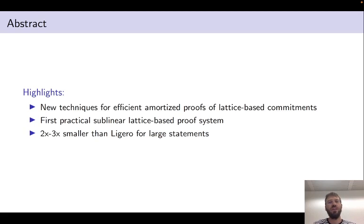On a technical level, we introduce new techniques for proving lattice-based commitments in an amortized way efficiently. This means that if one is given many lattice-based commitments, then an amortized proof proves all of these commitments at the same time with a total cost that is quite small. For example, in the best case, only logarithmic in the number of commitments.